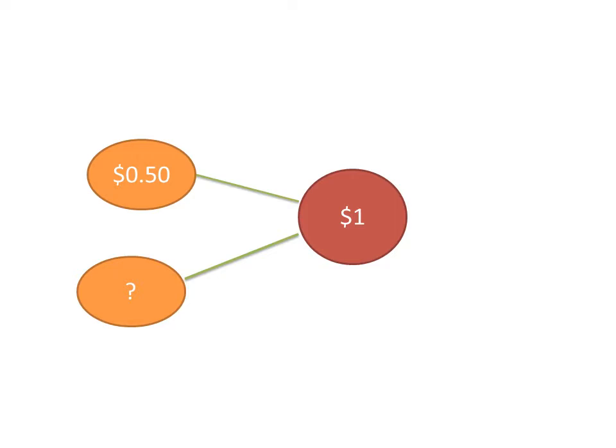Now we can use number bonds to show amounts of money that make 1 dollar. Let us take a look at the example. We can recall the pairs that made 100 to help us find the answer. You can see on the red: 1 dollar, and on the orange: dollar 0.50. So 1 dollar means 100 cents. We need to subtract 0.50 from 100 cents.